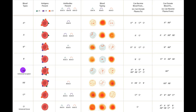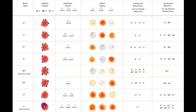AB positive individuals don't have any antibodies because all antigens are recognized as self, so they can receive blood from anyone — that's why they're called the universal acceptor. O negative individuals have anti-A, anti-B, and anti-D antibodies, so they cannot receive blood from anyone with A, B, or D antigens — they can only receive blood from other O negative individuals.